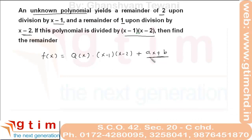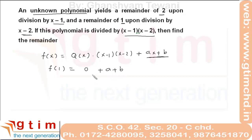Since we are dividing by a quadratic, the remainder must be linear, of the form ax plus b. It is not necessary that the remainder is always linear — it can be constant, in which case the value of a will automatically be 0. To get the values of a and b, we require two equations. By putting x equal to 1, we have f(1) equal to 0 plus a plus b. The value of f(1) is the remainder when f(x) was divided by x minus 1, which is given as 2.